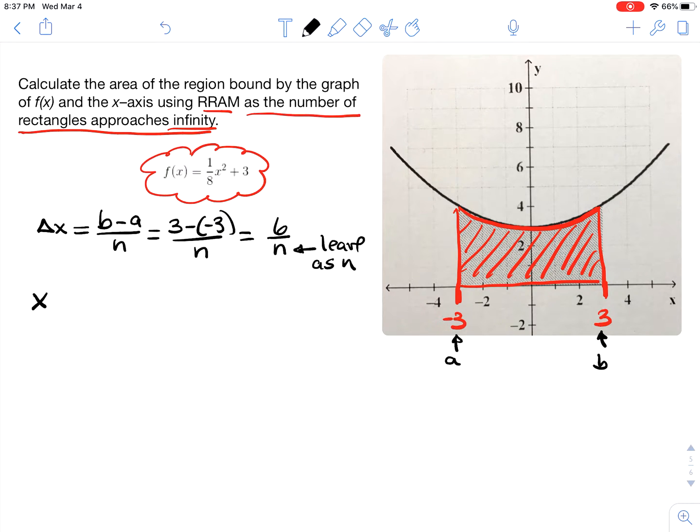After delta x we want to find the generating function for the x coordinates we call that the x sub i function and for our RRAM x sub i is defined as a plus i times delta x so our x sub i will be negative 3 plus 6i over n and I will just rearrange that to be 6i over n minus 3. I like to keep my minus signs in between two terms and now we have to plug that x sub i into our function f of x.